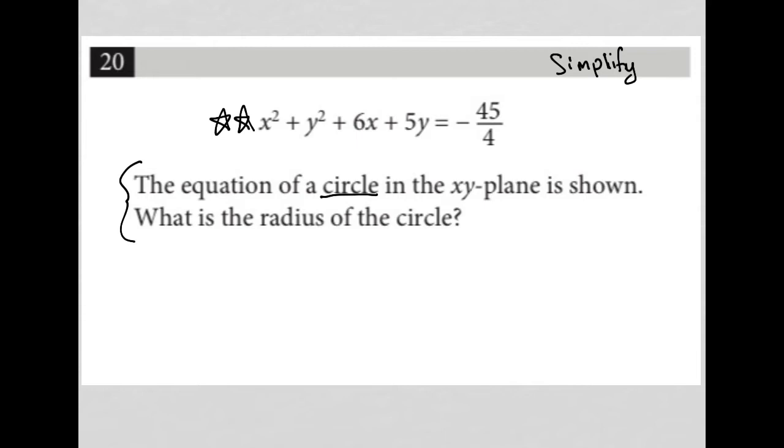So first of all, just as a little bit of review, the generic formula or equation of a circle is (x - h)² + (y - k)² = r², where (h, k) is the center of the circle and r is the radius.